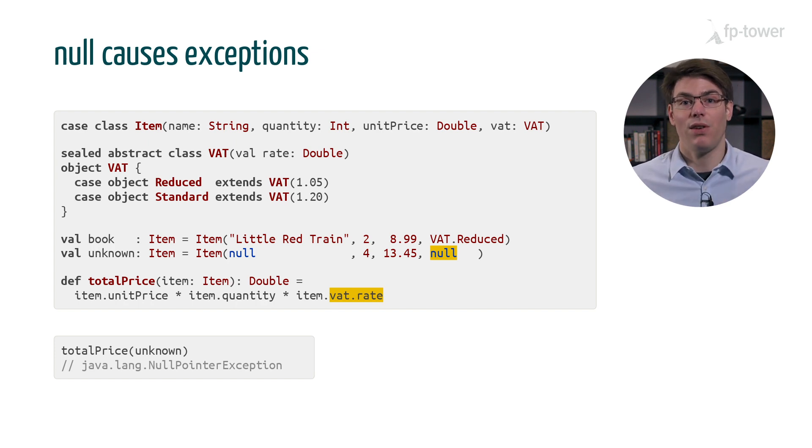As you can see, this works fine for book, but if we try to call total price with an item having null in the VAT field, then we would get a null pointer exception. This is because null doesn't have a rate value. We will also get the same result if we call total price with a null item. In this case we can't access the quantity, unit price, or VAT fields.